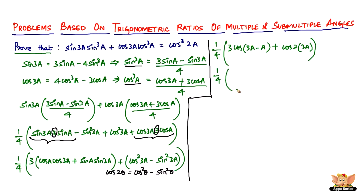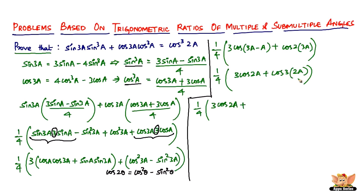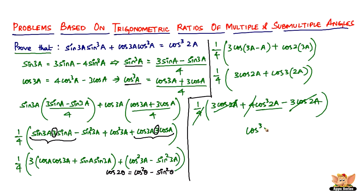So the expression becomes (1/4)·[3·cos(2a) + cos(6a)]. Now recall that cos(3θ) = 4·cos³(θ) − 3·cos(θ), so 3·cos(2a) + cos(6a) can be recognized as 4·cos³(2a). The +3·cos(2a) and −3·cos(2a) cancel, and the 4s cancel, leaving cos³(2a), which is the RHS.